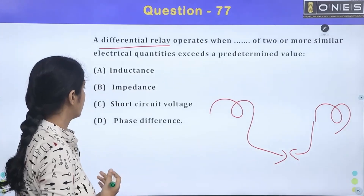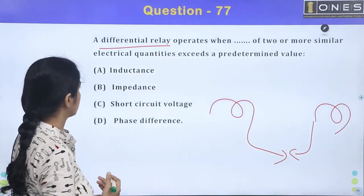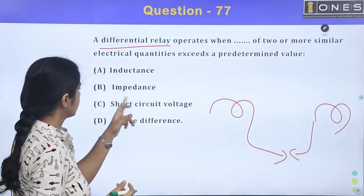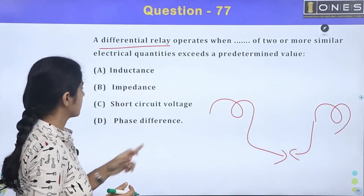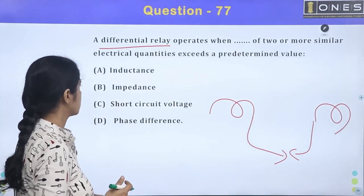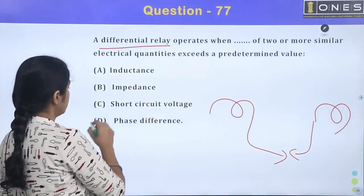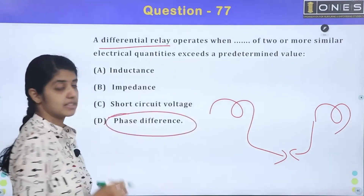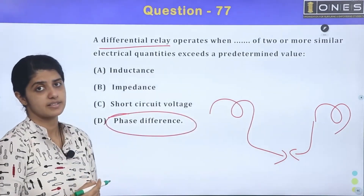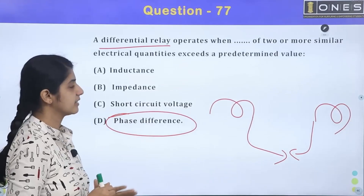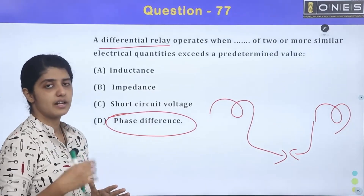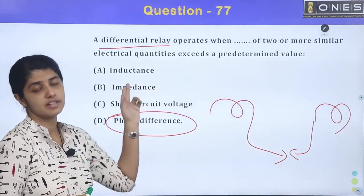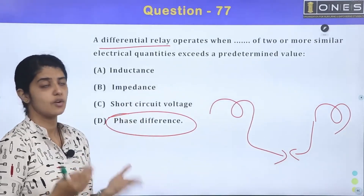The quantity options are: inductance, impedance, short-circuit voltage, or phase difference. The correct answer is phase difference — the phase difference is the key quantity that triggers the change in the differential relay.